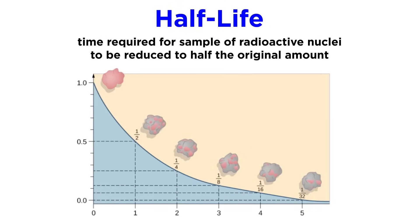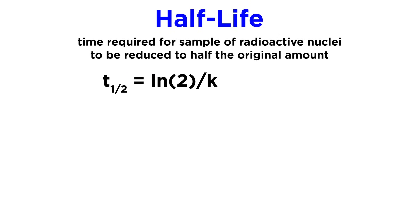We can also describe the rate of decay in terms of half-lives, or the amount of time that must elapse for a sample of radioactive nuclei to be reduced to half the original amount. It will be the case that a half-life will be equal to the natural log of 2 over k, or 0.693 over k.